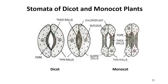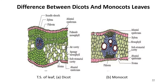The main difference between stomata of monocot and dicot plants is that the guard cells of monocots are dumbbell-shaped, as you can see in the picture, whereas the guard cells of dicot plants are kidney-bean shaped. This figure shows the transverse section of dicot and monocot leaves. Let's discuss the differences between dicot and monocot leaves in detail.